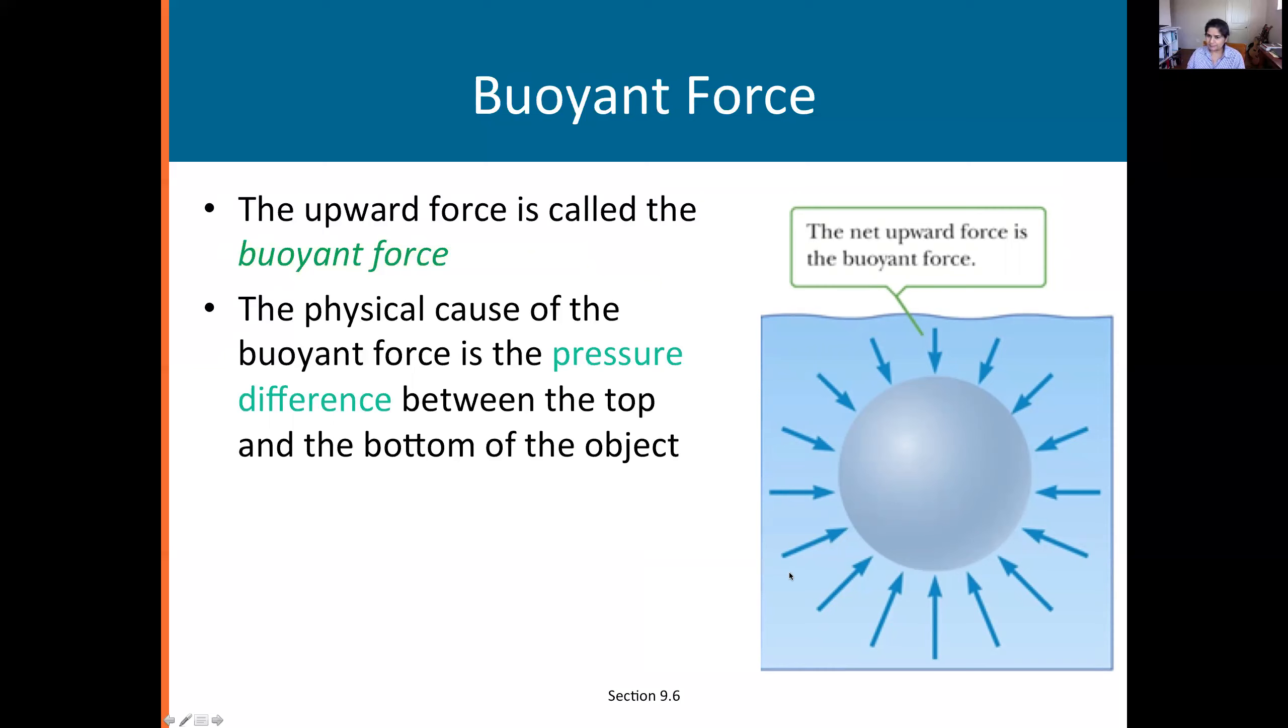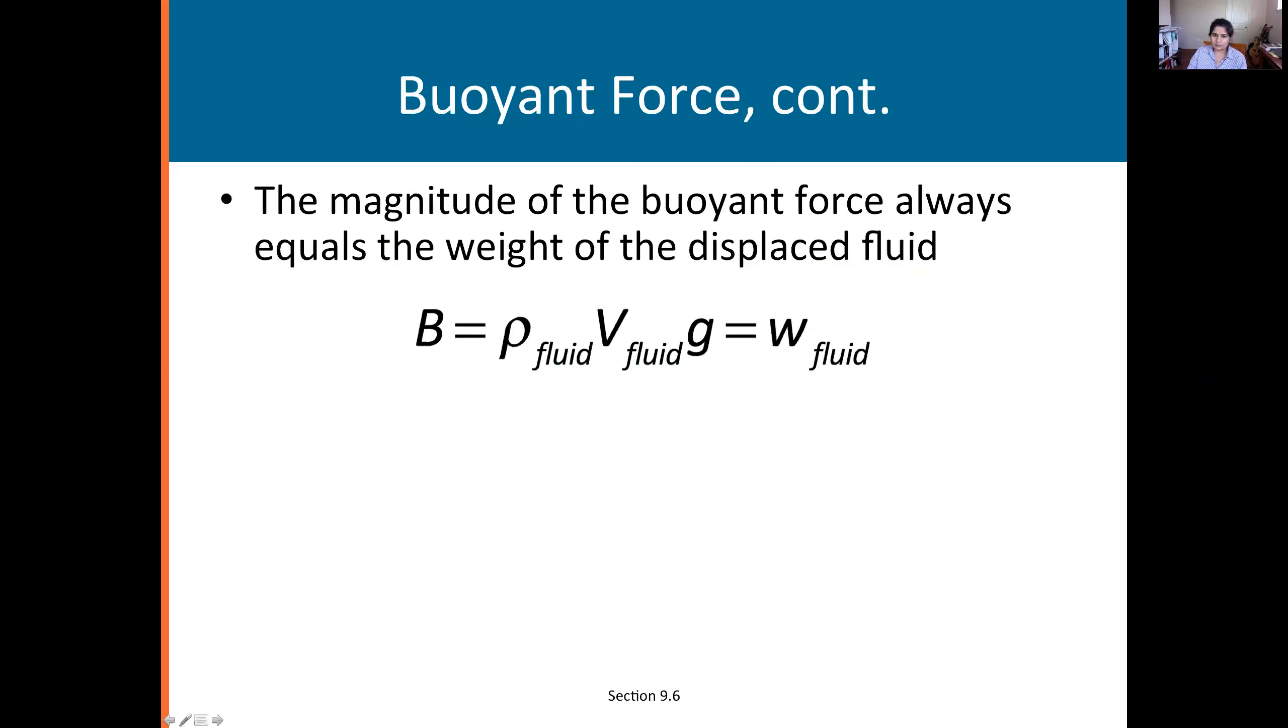That's because the pressure at this level is much lower than the pressure due to the fluid at this level. At this level we have all this ρgh to be added. Hence there's a net upward force due to this difference. Here they canceled because they're at the same height, but these are completely different heights. That pressure difference gives rise to the buoyant force.